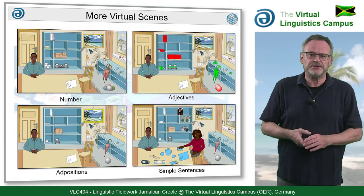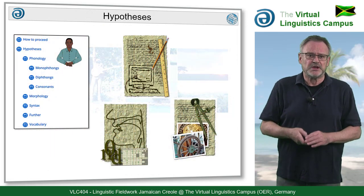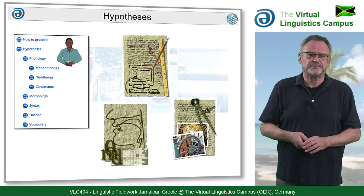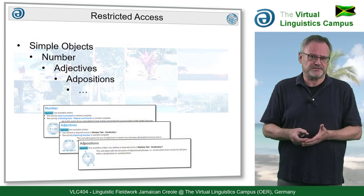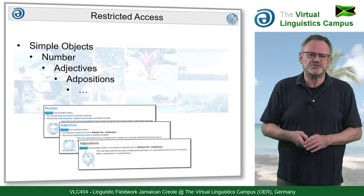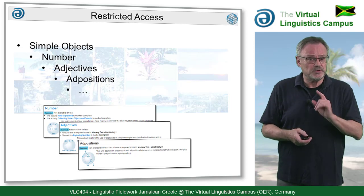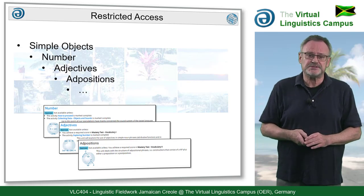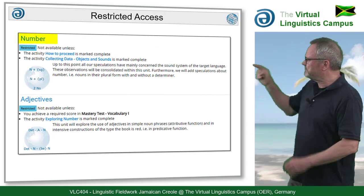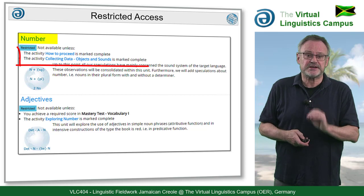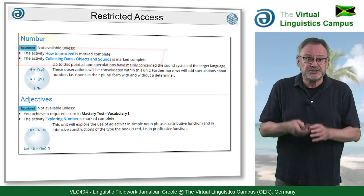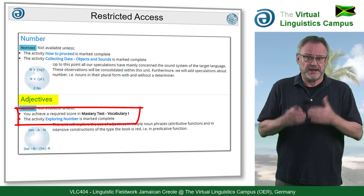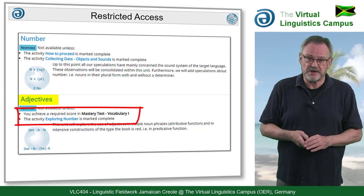Starting with the second explorative unit, each unit has a hypothesis section where the previous assumptions and speculations are not only summarized but are also judged by the native speaker. All units or topics are activated in a successive fashion. That is, in contrast to many other VLC courses, you cannot access the units all at once, but only successively. This guarantees that students first build their hypotheses before they see the solutions. For example, the unit Number can only be accessed if two previous activities are completed, and the subsequent unit Adjectives is only available if vocabulary test 1 is passed successfully and the exploration activity of the previous unit was marked as successful.